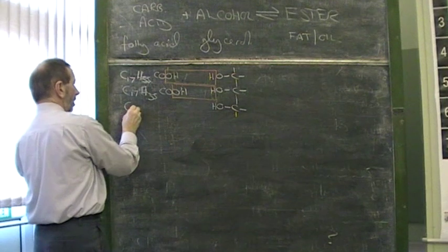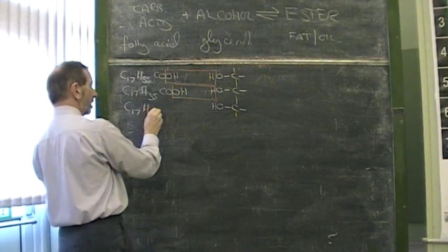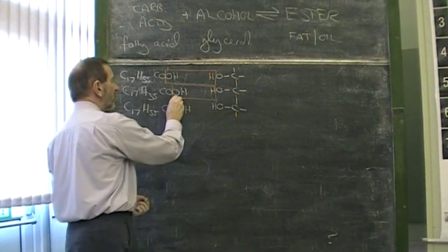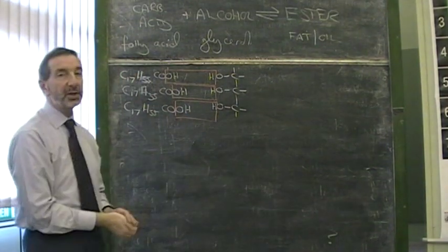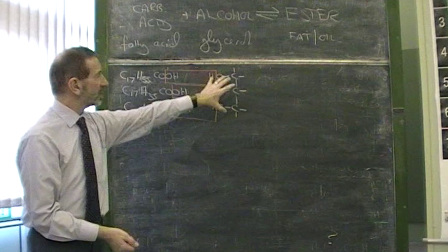So, we end up with a colossal molecule, one of the biggest molecules you've met in the course. And we have a condensation, losing water, three times over. Fatty acid, glycerol. What does the ester look like?